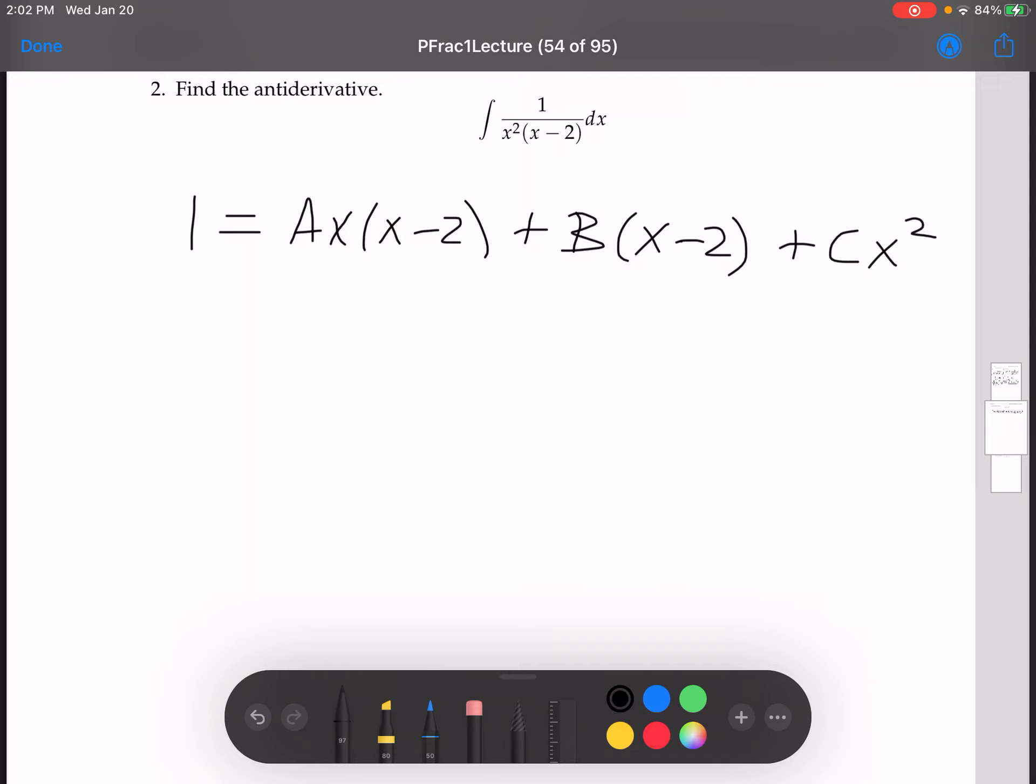All right, so now let's distribute some things through. Let's see, we have 1 equals, so I'm going to distribute this Ax through to both pieces. So I have Ax squared minus 2Ax. Distributing the B to both pieces, I get Bx minus 2B, and I have Cx squared.